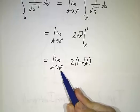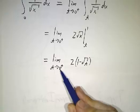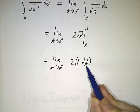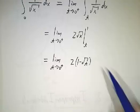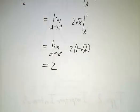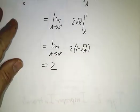And we get twice 1 minus root of t. And now we say what happens as t approaches 0? Well, if t is a tiny number, the square root of t is a tiny number. 2 times 1 minus a tiny number is approximately 2. So the limit is 2.